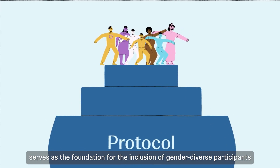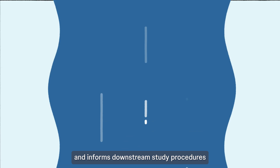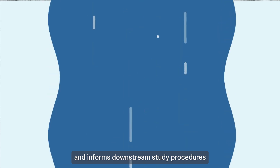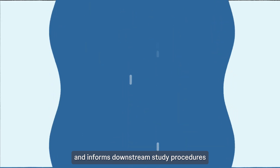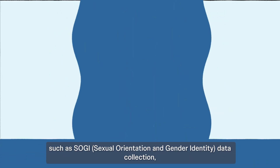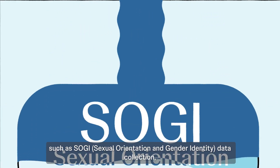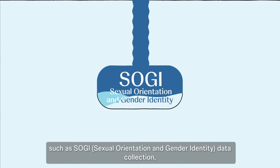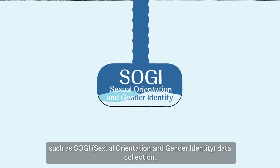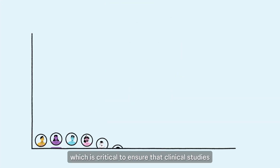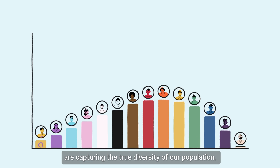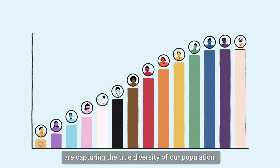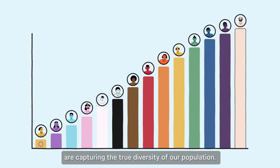De-gendering informs downstream study procedures, such as SOGI — sexual orientation and gender identity — data collection, which is critical to ensure that clinical studies are capturing the true diversity of our population.